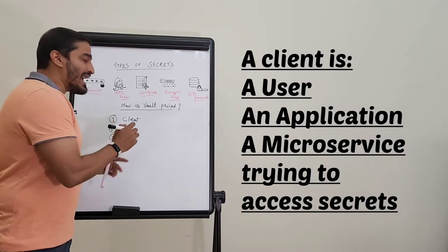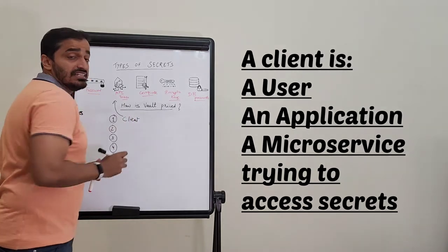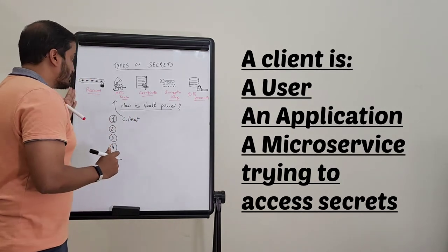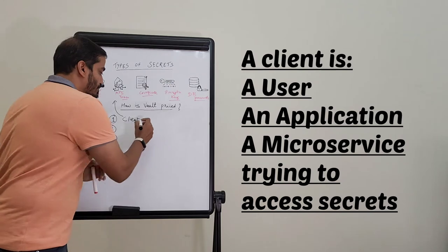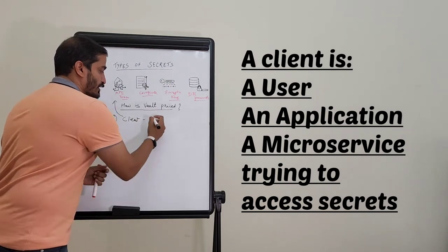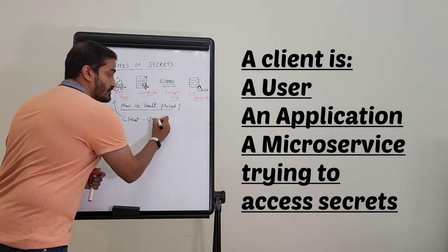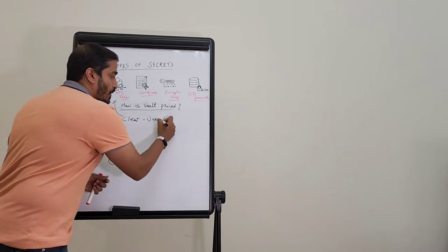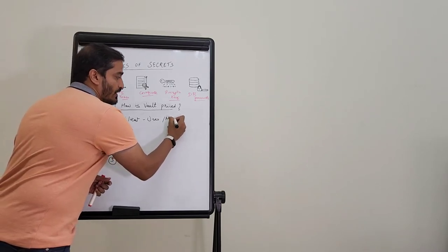User who wants to access one of these secrets. So we spoke about the different kinds of secrets. It could be, again to reiterate, a user, physical user, a person, etc., or a microservice or an application.